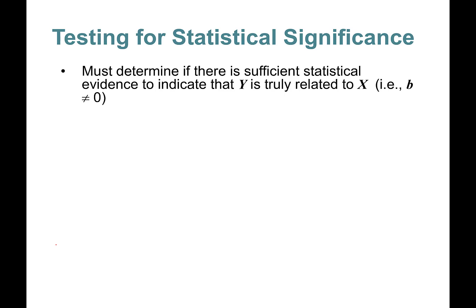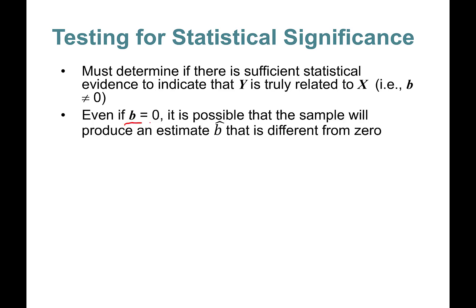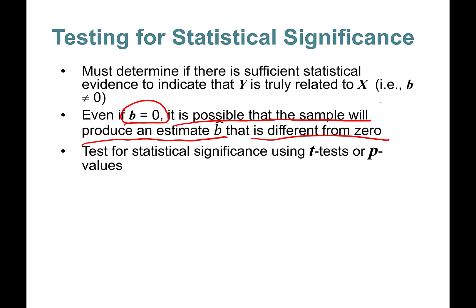Even if beta is equal to zero, it is possible that the sample will produce an estimate beta-hat that is different from zero. So what we do is test for statistical significance using what we call a t-test or by looking at the p-value. In this part, Part 4, we'll learn how to conduct a t-test.